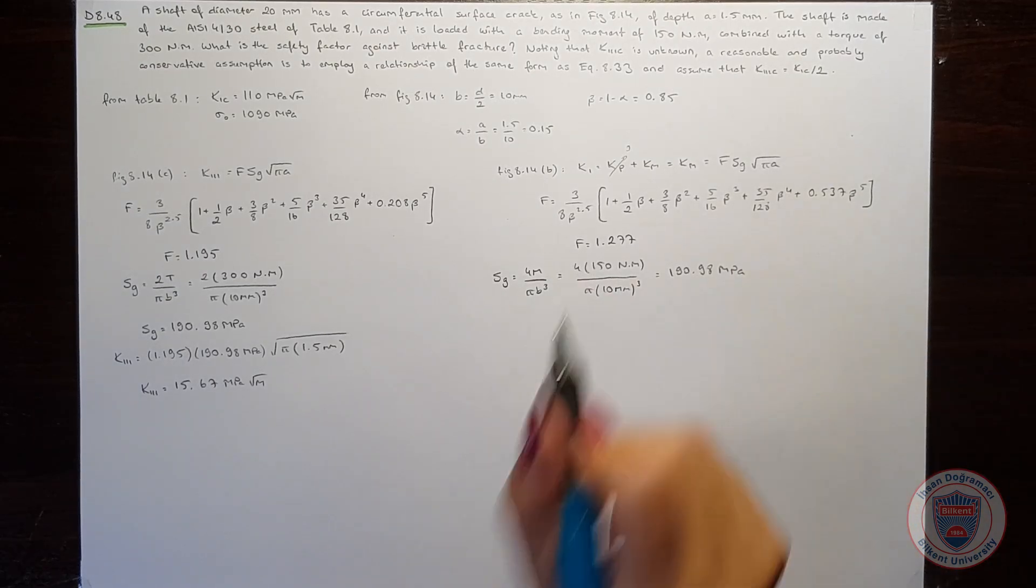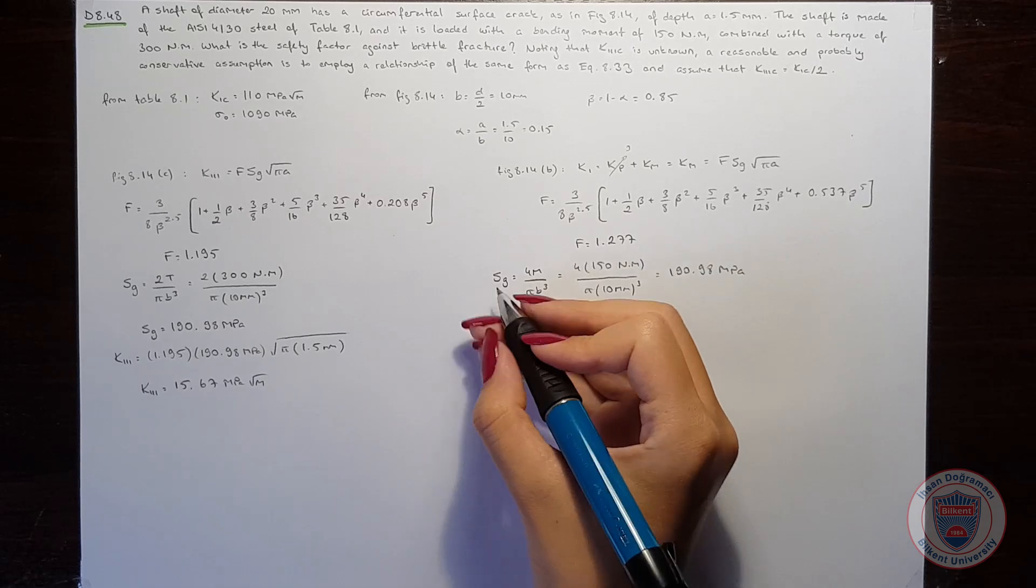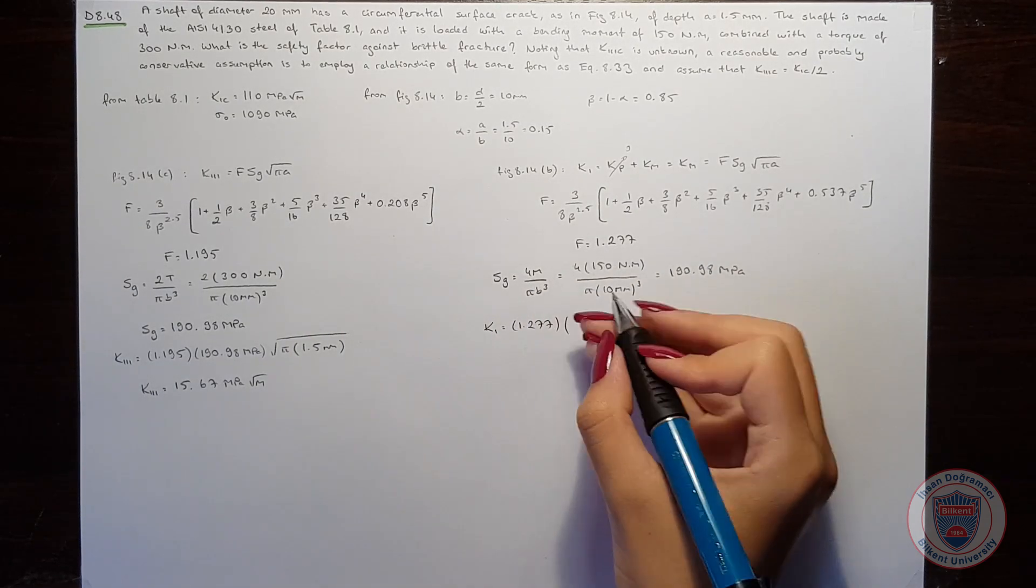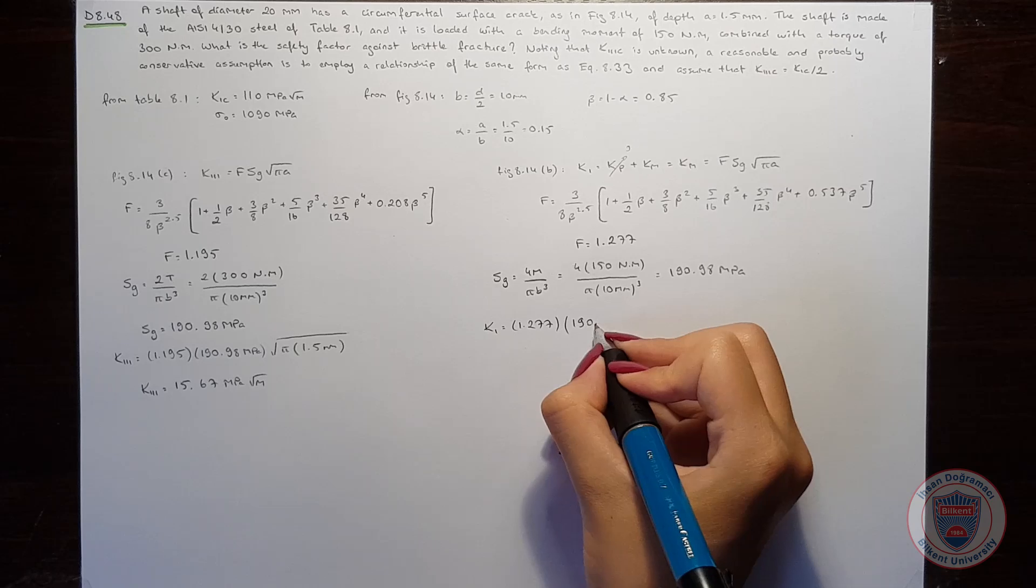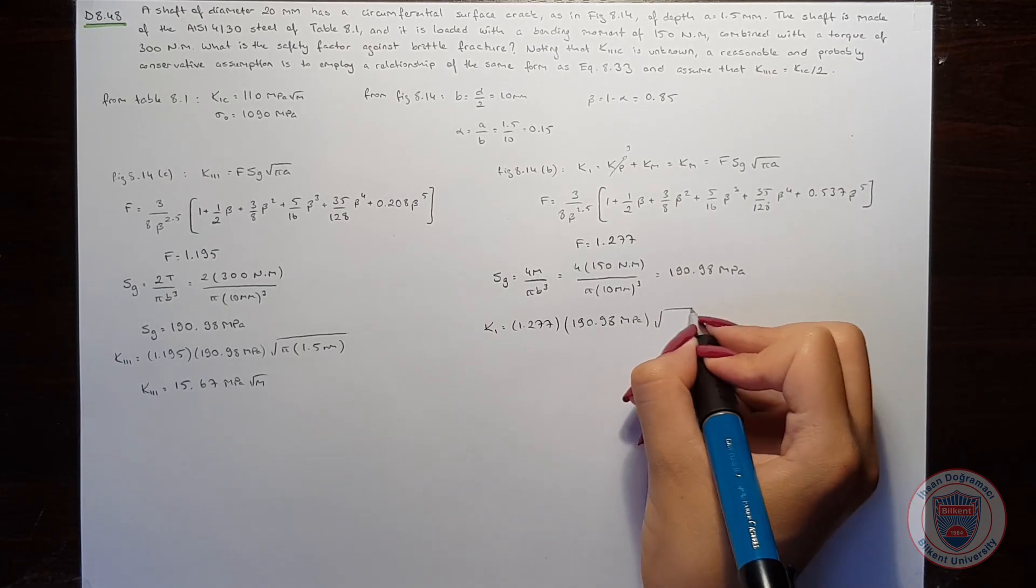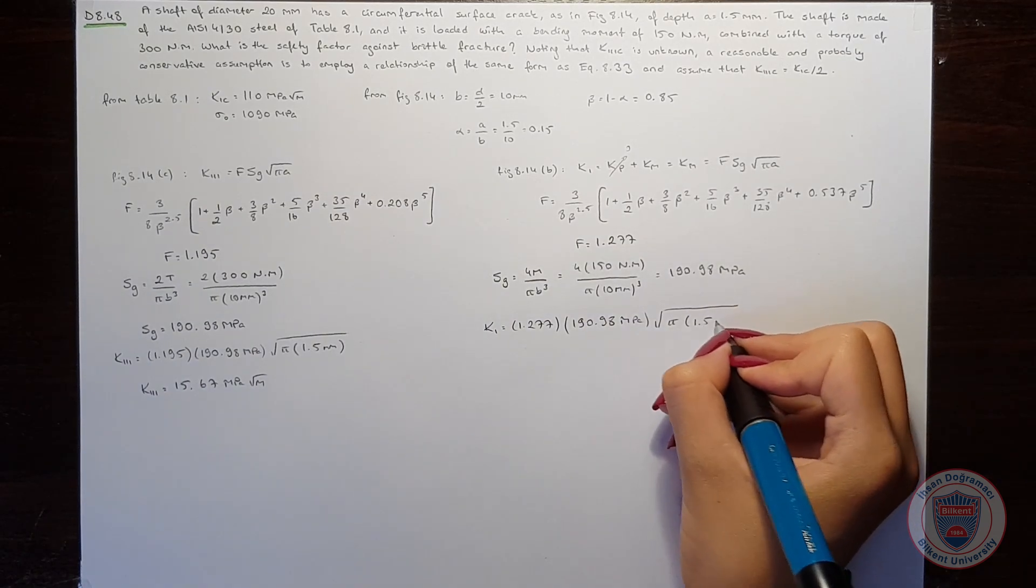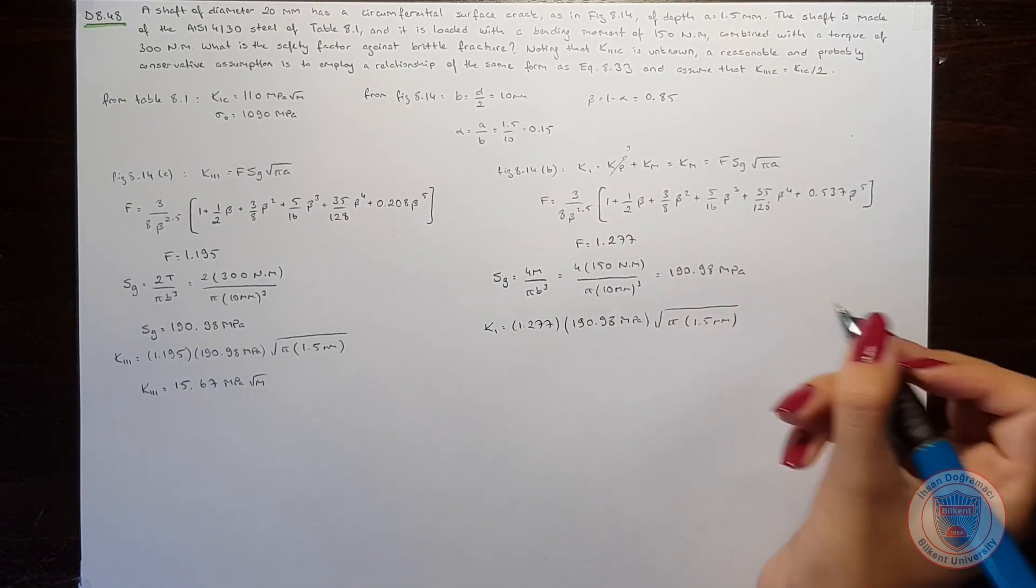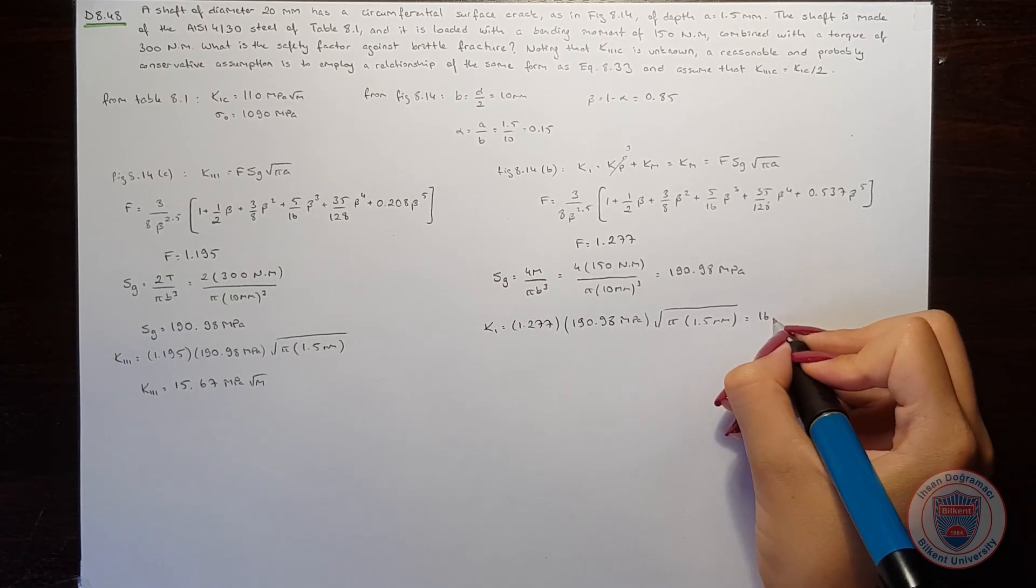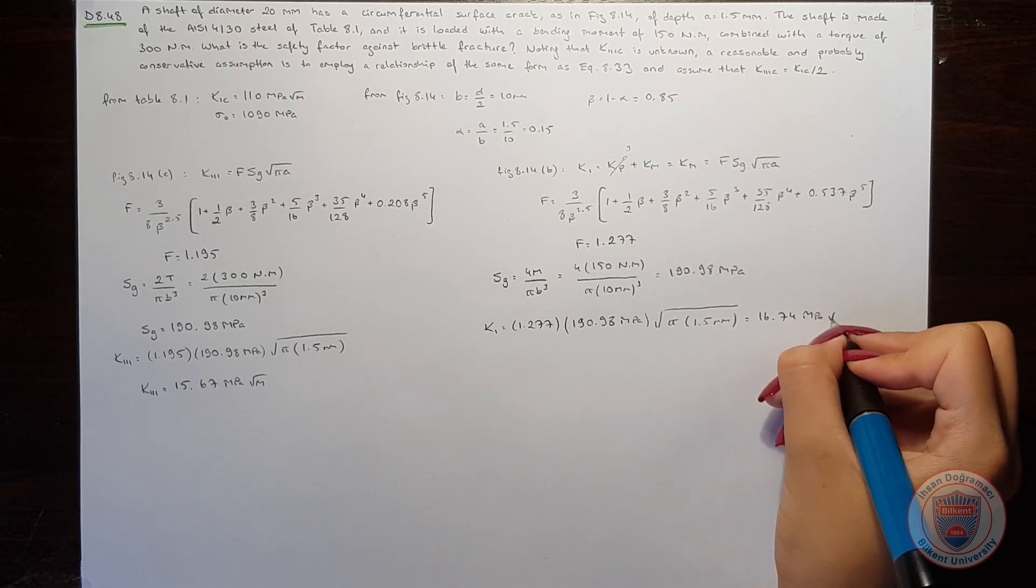We can now calculate K1. It equals the form factor times Sg times square root of pi times 1.5 mm, giving us K1 equals 16.74 MPa square root meters.